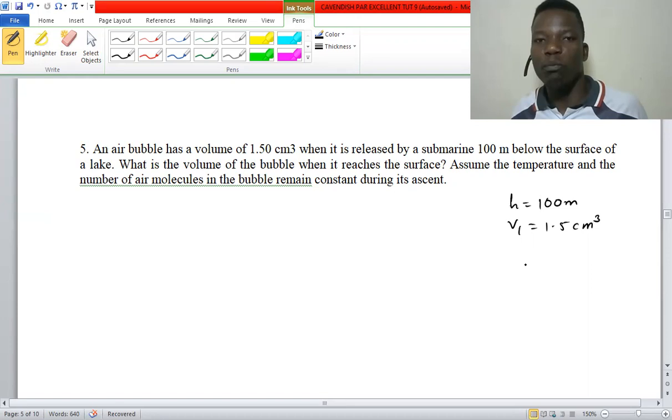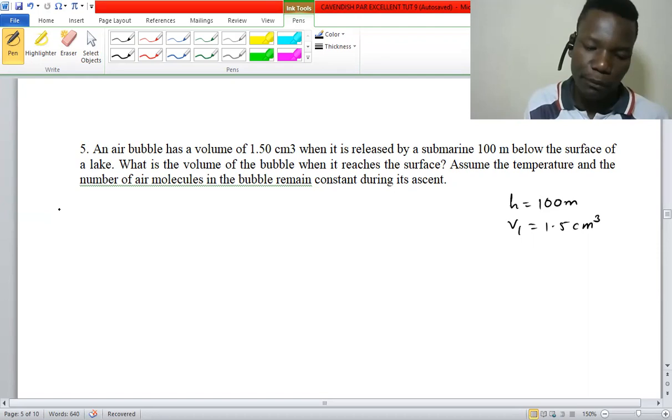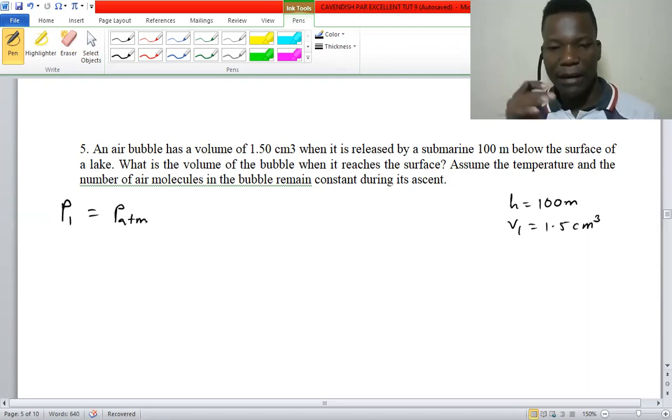So we have to find the initial pressure. The initial pressure, which is P1, is going to be a summation of atmospheric pressure on the surface and also the fluid pressure.